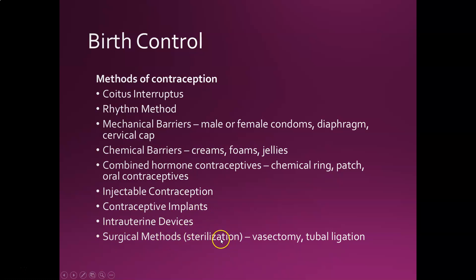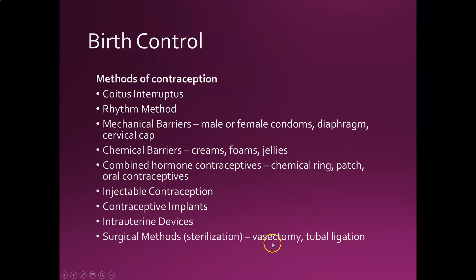In a vasectomy, the vas deferens is cut and tied off so that sperm stays inside the testicles and never leaves. The male still makes semen but there's no sperm in it — they can still have sex, they just won't make babies. Tubal ligation is for the female — you cut and tie up the fallopian tubes so that when the egg is released each month it can't travel down the tube, and cannot be fertilized.